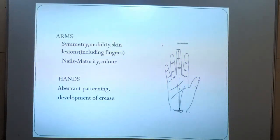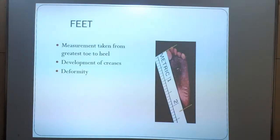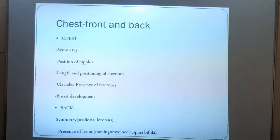Regarding the arms, symmetry, mobility, and nails for maturity and color should be noted. For the hands, abnormal patterning or development of creases should be assessed. The feet are measured from the greatest toe to heel, and development of creases and any deformity noted. For the chest, position of nipples, clavicles, and breast development are noted.